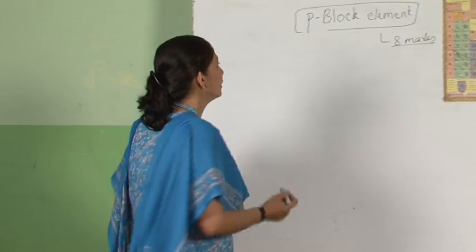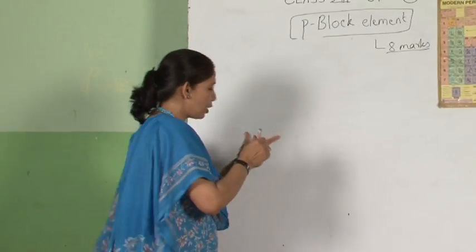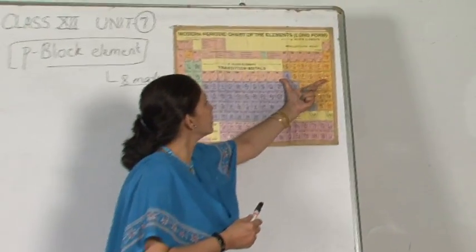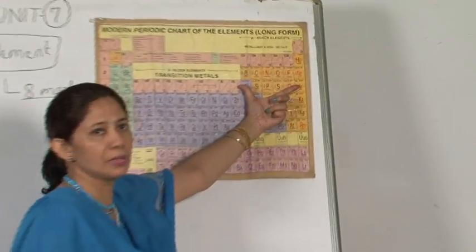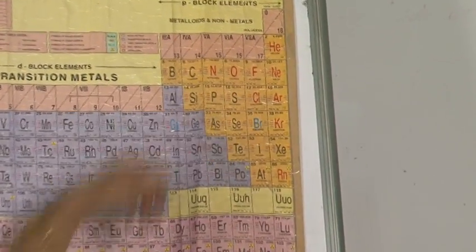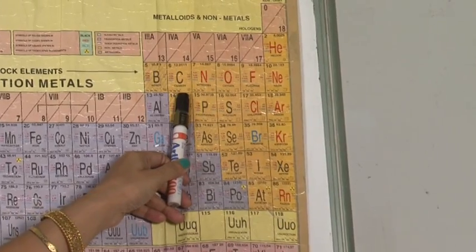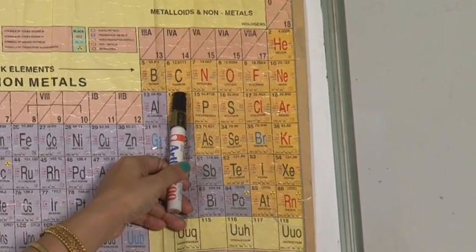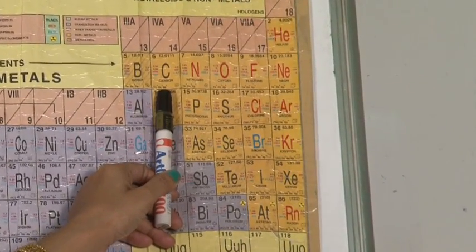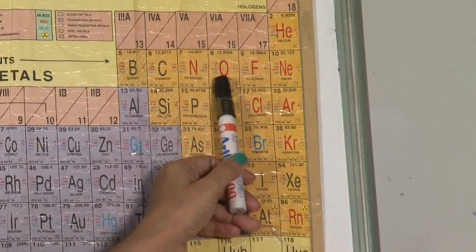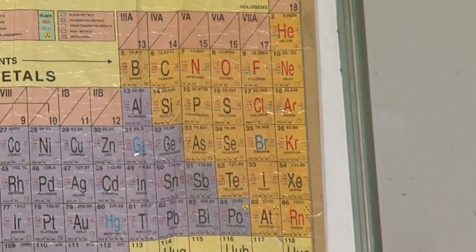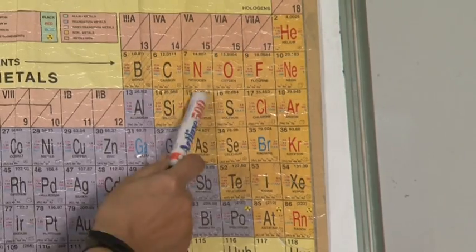I will just start with this. In the p block elements — now look here — this is the p block element. Group 13 and group 14 have already been dealt with in class 11th. In the 12th standard, you have got the 15th, 16th, 17th, and 18th groups. I will start with the 15th group element.